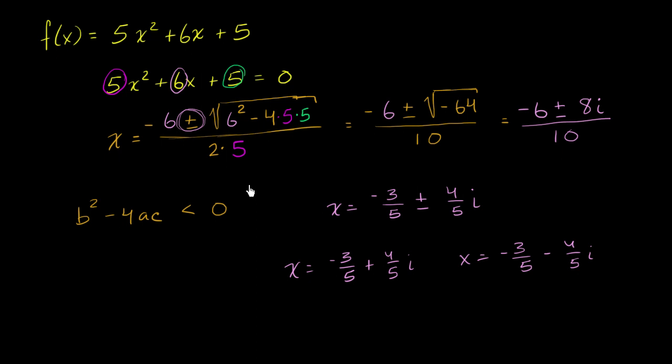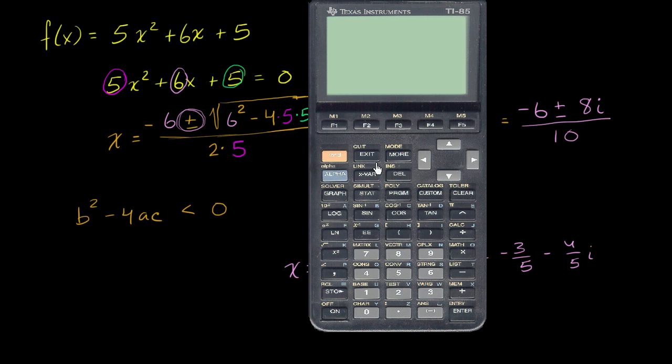Now let's verify graphically that this does not have any real roots. Let me go into graph mode. So y1 is equal to 5 times x squared plus 6x plus 5.